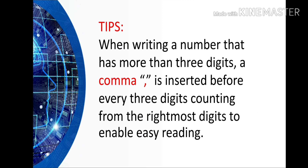Here are some tips. When writing a number that has more than three digits, a comma is inserted before every three digits counting from the rightmost digit, to enable easy reading.